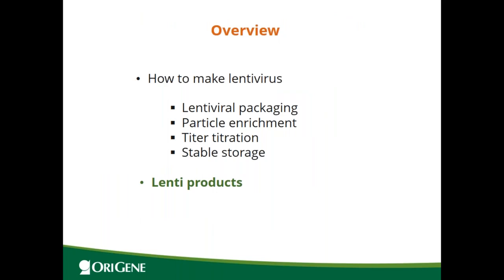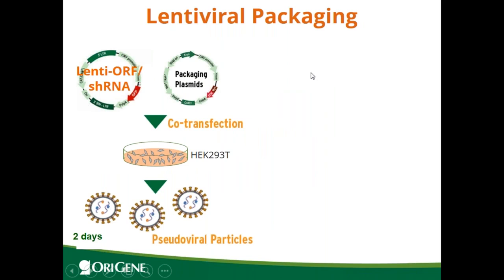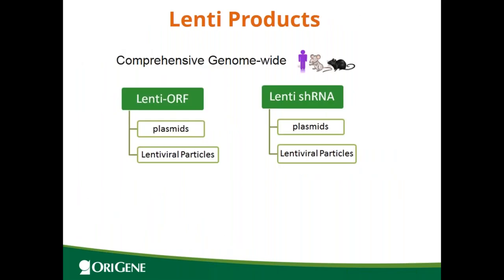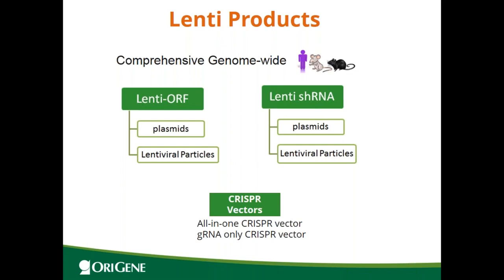Next, I'm going to talk about lenti products that OriGene offers. To make a virus, you need the content — the lenti ORF or lenti shRNA. The main lenti products OriGene offers include comprehensive genome-wide coverage for human, mouse, or rat. For gene overexpression, lenti ORF is offered. To knock down a gene, we offer lenti shRNA. There are two types of products: lenti plasmid that you can use to make the virus yourself, or ready-to-use pre-titered lenti viral particles. We also offer CRISPR lenti vectors — all-in-one CRISPR vectors and gRNA-only CRISPR vectors.